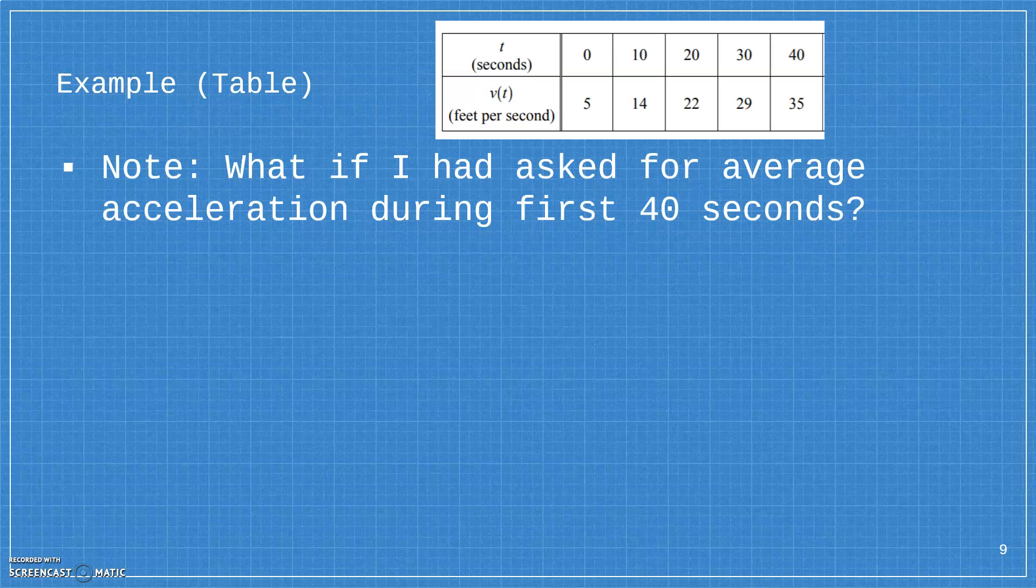And I also want to point out that these average value problems are not difficult, but it is easy to get confused about what you're asked to do. I asked you for the average velocity. Well, you were given the velocity function, so the average velocity is going to be the average value of that function. But if I'd asked you for average acceleration, that would be the rate of change of the velocity function because acceleration is the derivative of velocity. So I want the average rate of change. So if I had asked for average acceleration, that would be 35 minus 5 divided by 40 minus 0. So just to be aware of the wording can get confusing with these problems. The math generally isn't as long as you're okay with integrals.